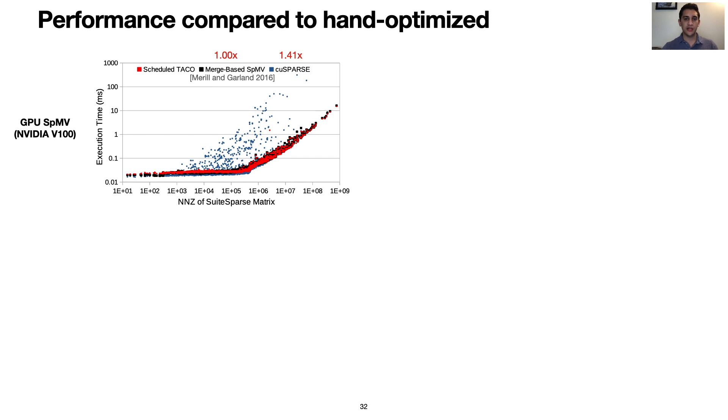This automatically generated kernel achieves state-of-the-art performance on a modern NVIDIA GPU over the entire SuiteSparse sparse matrix dataset. Numbers in red show geometric mean speedups over hand-optimized implementations. Due to our load balancing, we achieved speedups compared to cuSPARSE on irregular matrices. The merge-based SPMV algorithm also load balances reads of the row pointers to achieve perfect load balancing, but suffers from additional overhead. Over the entire dataset, we match their performance.